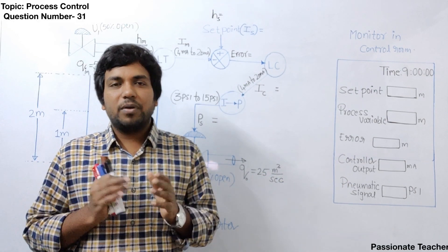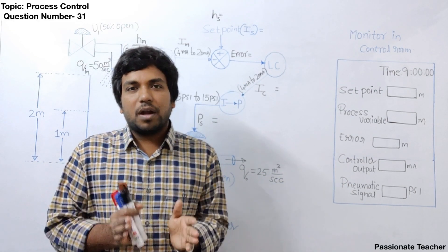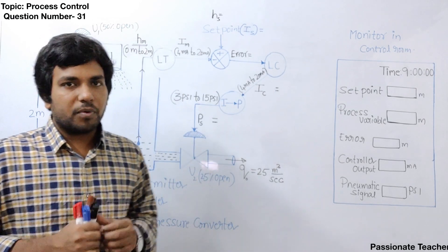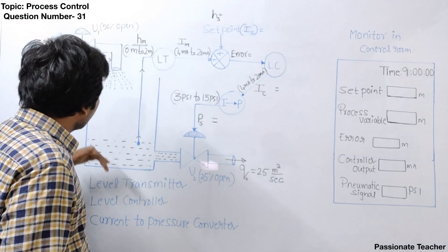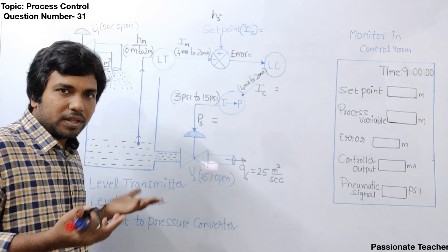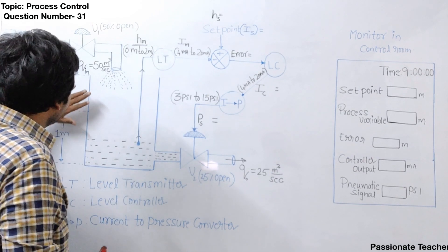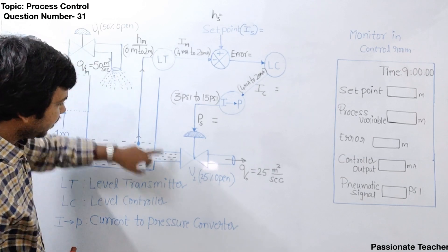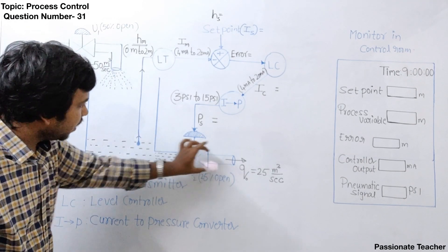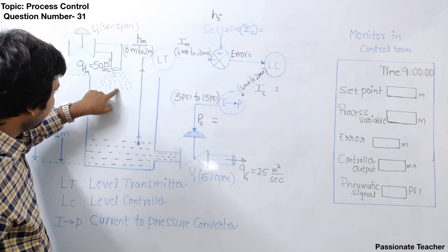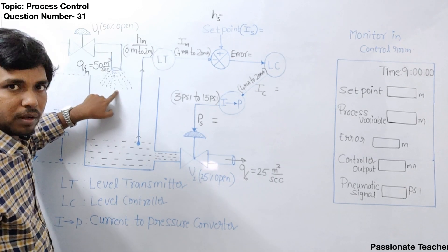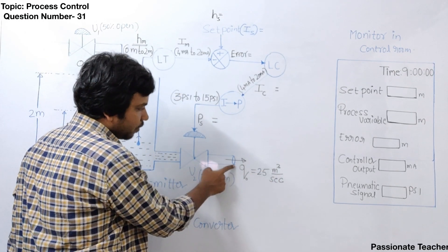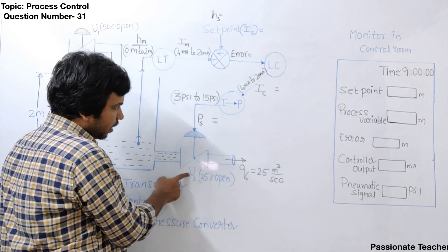Today I will discuss how to control the level of water inside a tank. We are going to control the water height inside the tank, which has a height of almost two meters. We have two pipes here — an inlet pipe and an outlet pipe. To control the flow rate of fluid from pipe one, we have valve one, and to control the volumetric flow rate from the second pipe, we use valve two.